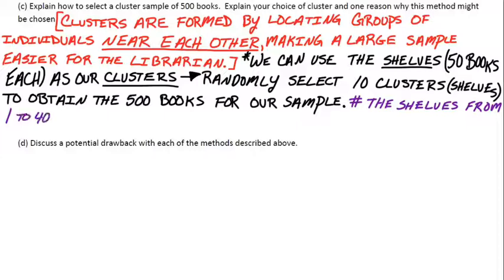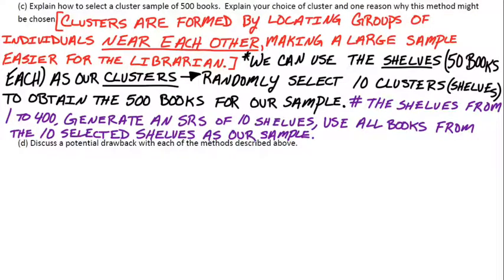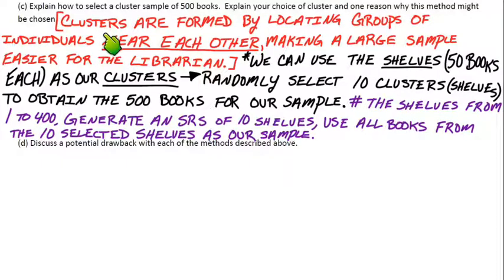There are 400 shelves because 20,000 books divided by 50 per shelf equals 400. We randomly choose from those. Cluster sampling seems like the quickest and most efficient way to sample 500 books at any given time in the library, though not necessarily the most effective.